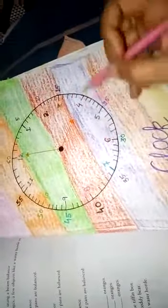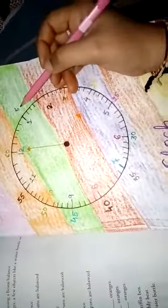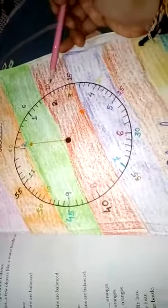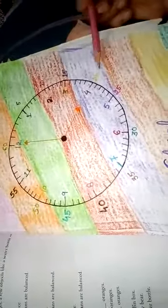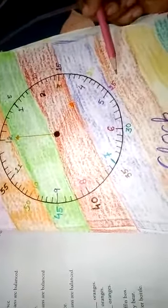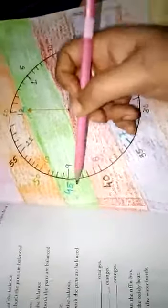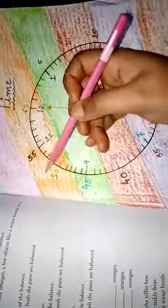Now, you will see that I have also written some time. Like, 5, 10, 15, 20, 25, 30, 35, 40, 45, 50, 55, 60.